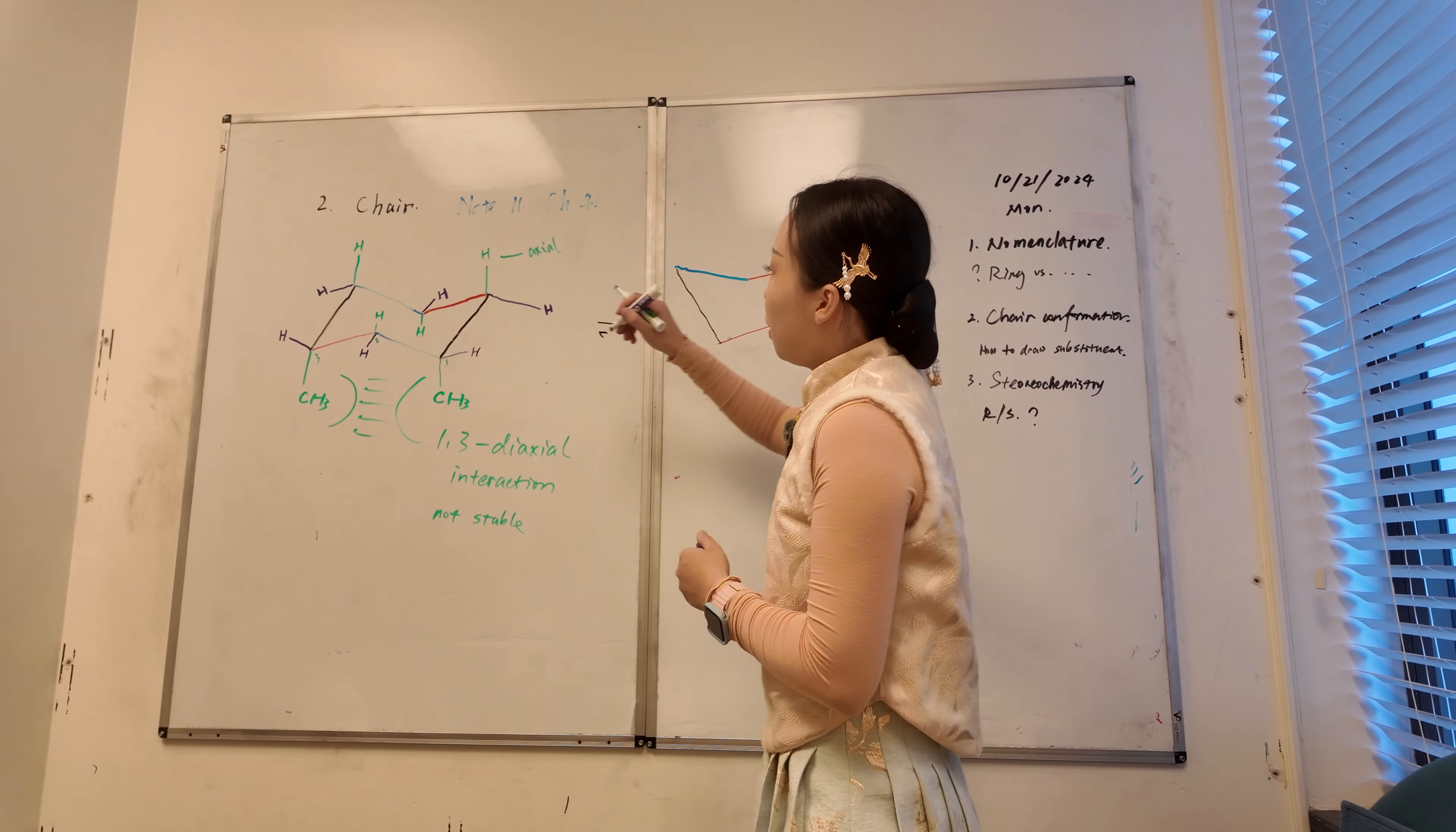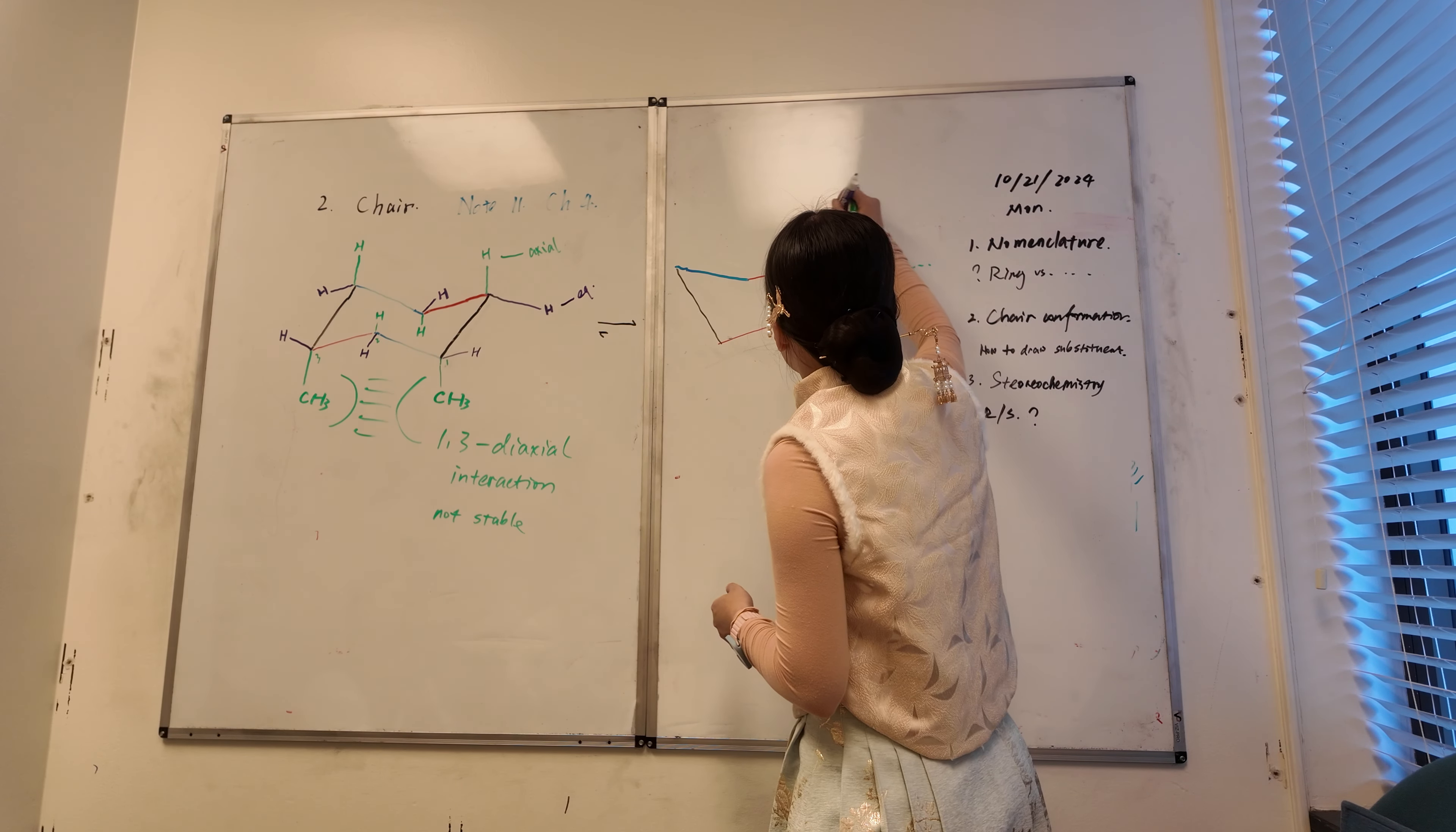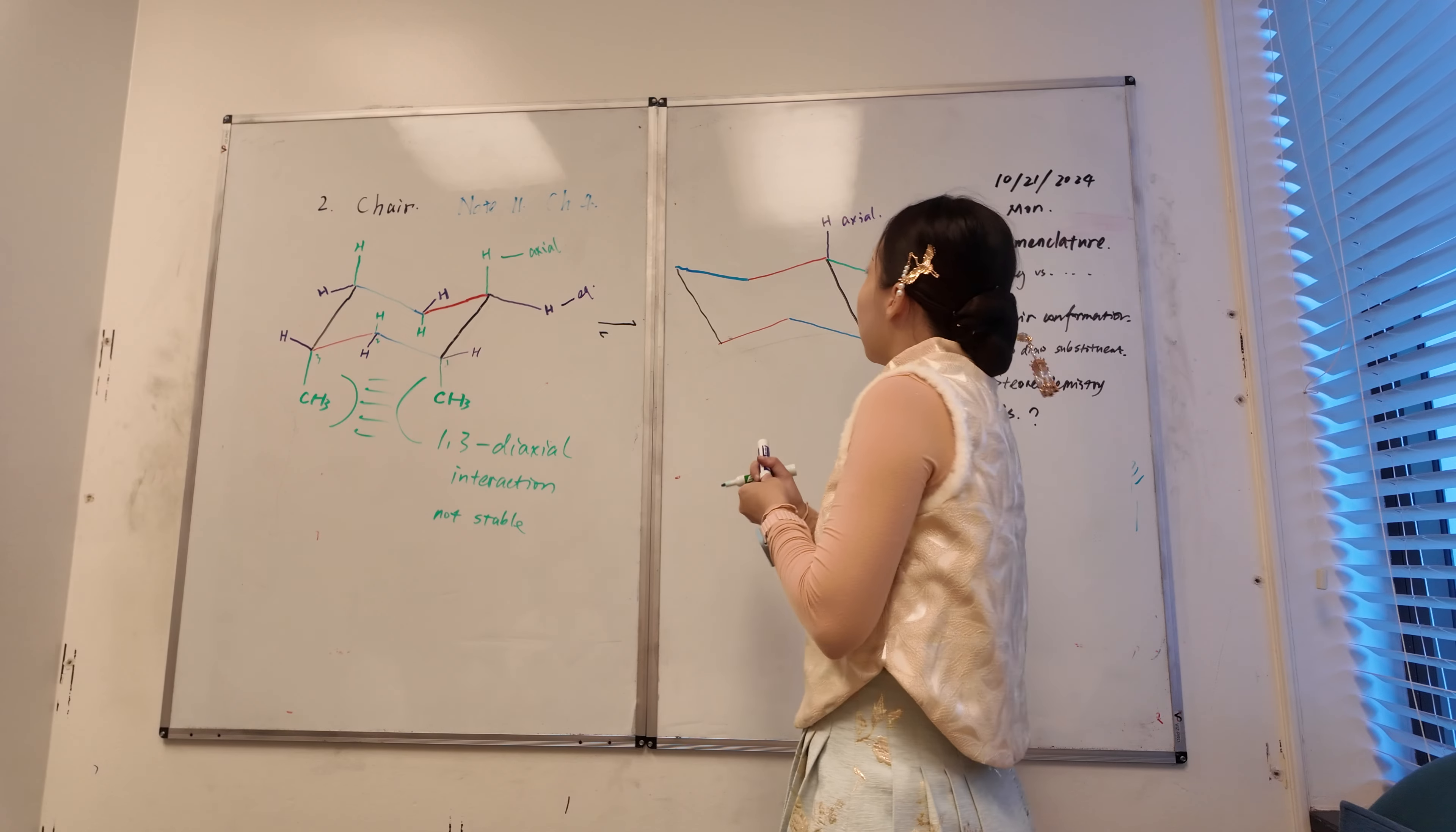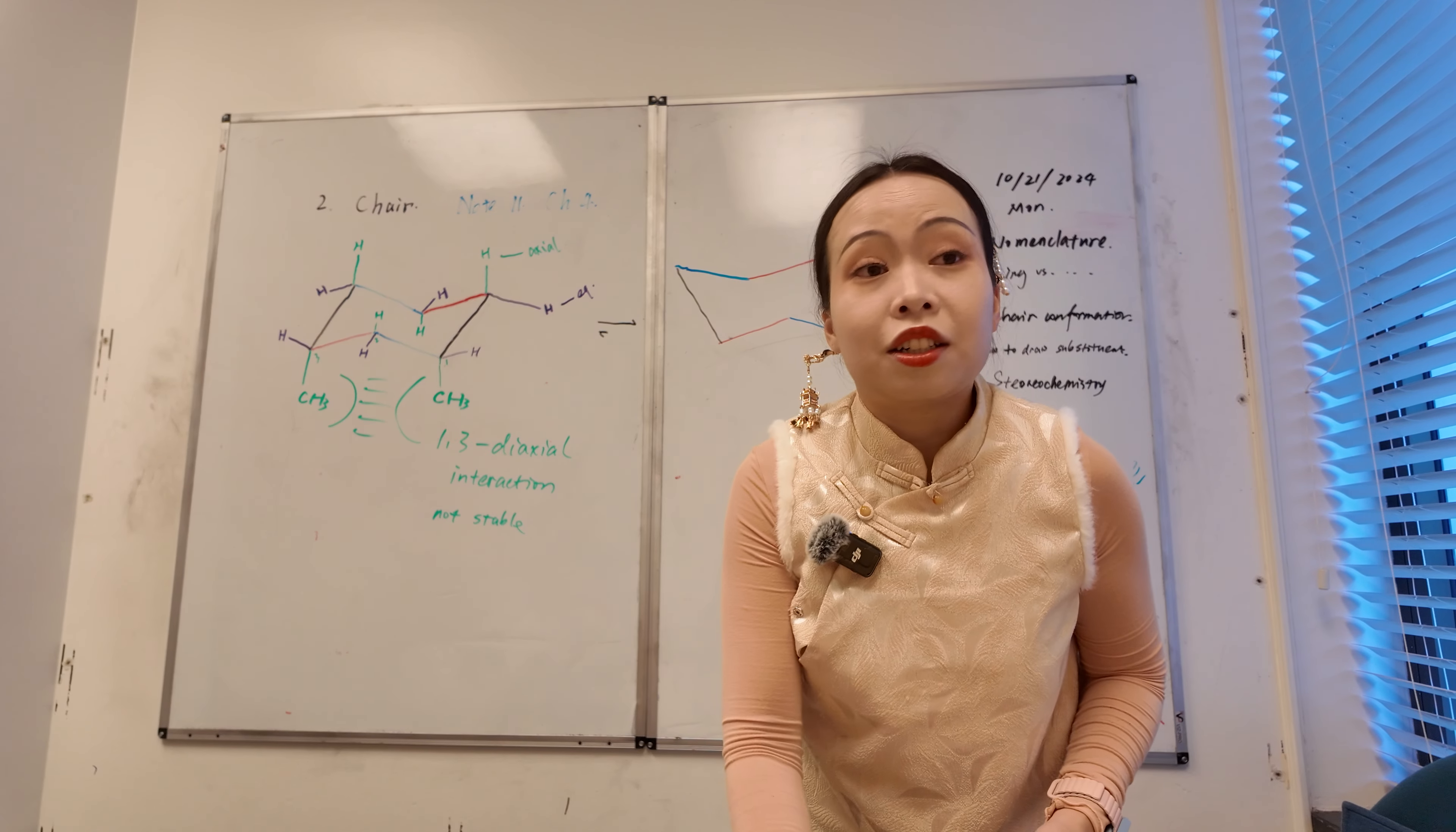Our previously the hydrogen, the purple hydrogen was equatorial. Now become axial. So we'll do the same because now axial is the easy one or do all the axial. I think axial is easy.